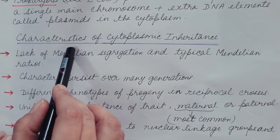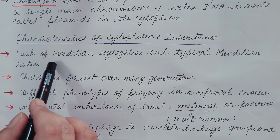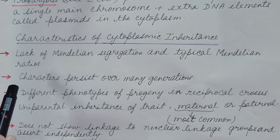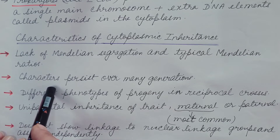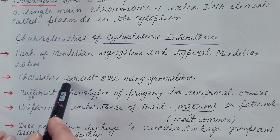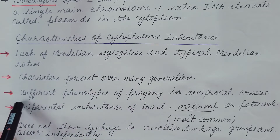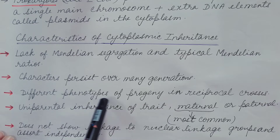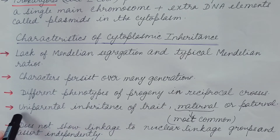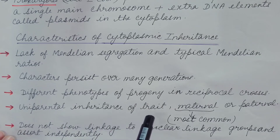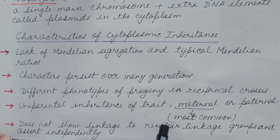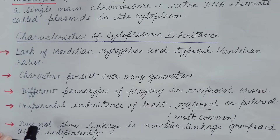The characteristics of cytoplasmic inheritance are: it lacks Mendelian segregation and typical Mendelian ratios; characters inherited by cytoplasmic genes persist over many generations; reciprocal crosses yield different phenotypes in the progeny; it shows uniparental inheritance of traits — either maternal or paternal, but mostly maternal; and these genes do not show linkage to nuclear linkage groups and assort independently.